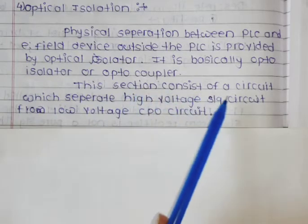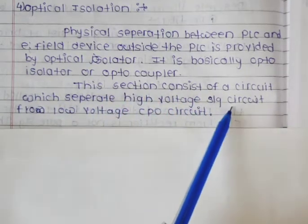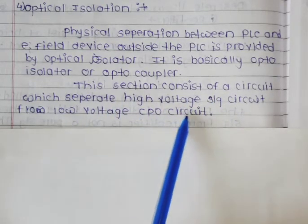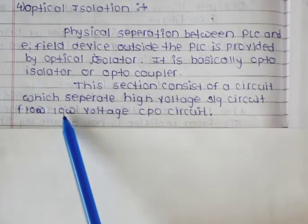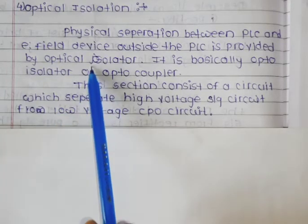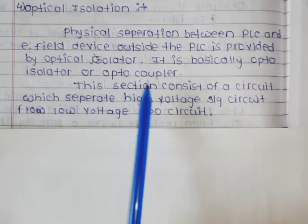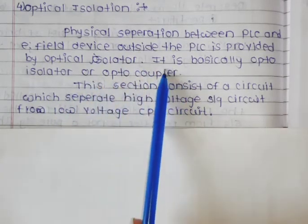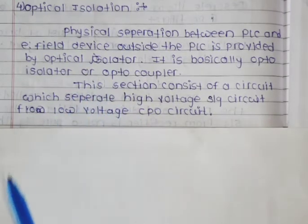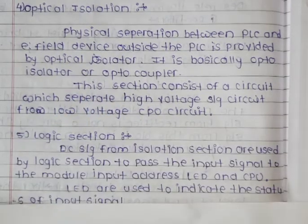This section consists of a circuit which separates the high voltage signal circuit from the low voltage CPU circuit. The opto-isolator and opto-coupler functions have been covered in the previous semester. Next is the logic section.